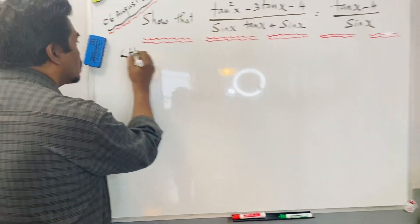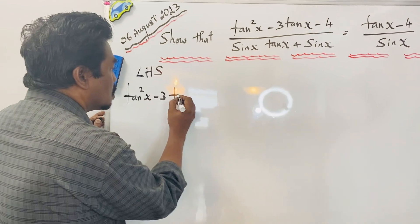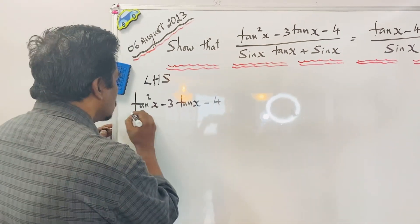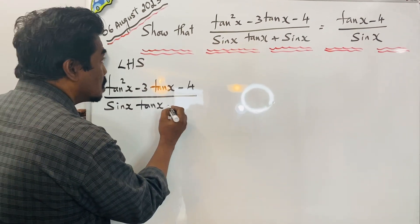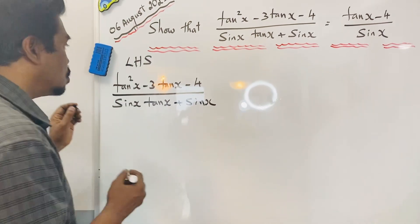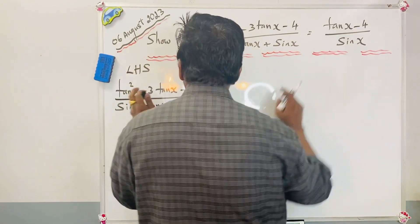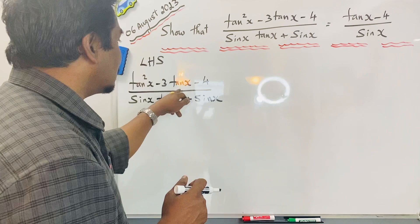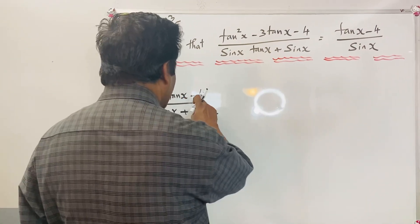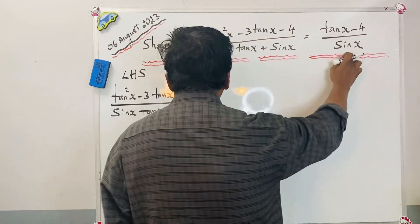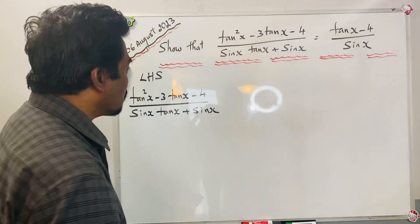So the left hand side says tan²x - 3tanx - 4 over sinx tanx + sinx. When we are seeing the right hand side, we already have tanx, we have some tanx's here, tan²x and tanx. We can try to get rid of those things. Also we have -4 here, there is -4, there is sinx here, there are two sinx. We can try to remove this sinx mathematically.